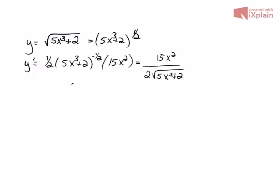Then we bring the exponent down, decrease the exponent by 1, that's where the negative 1 half came from, leave the inside the same, and then derivative of the inside.